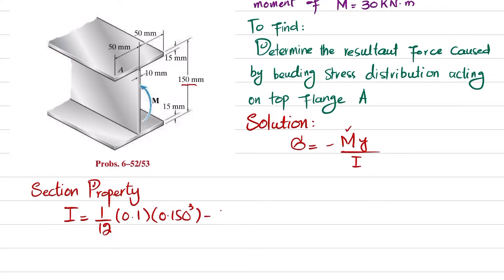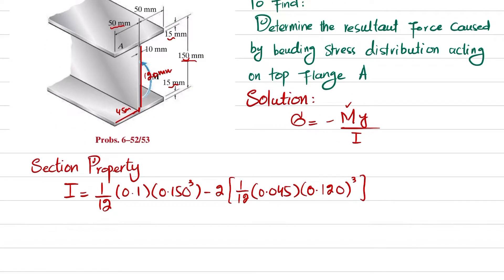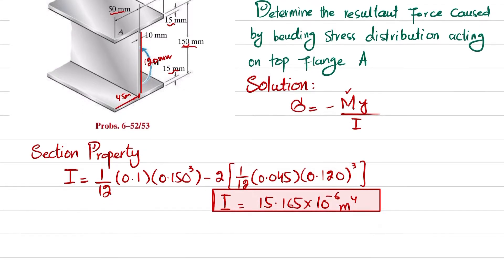We subtract two times (1/12) times the inner breadth, which is 45 mm (0.045 m) — this is 50 minus 5, giving 45 mm — and the inner height is 150 minus 15 minus 15, which equals 120 mm (0.120 m), cubed. Solving this, I equals 15.165 × 10⁻⁶ m⁴.